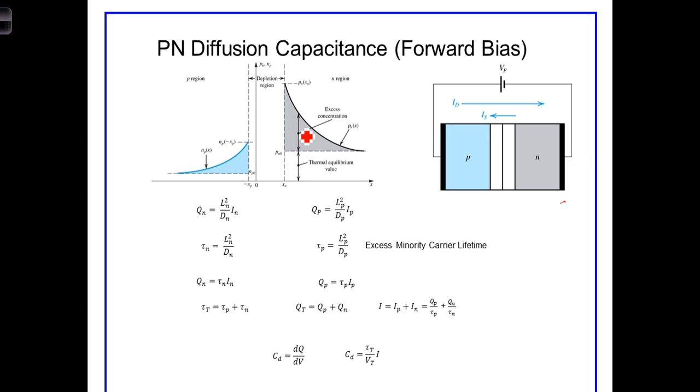Again, as we've seen before, this excess concentration is represented by the shaded areas of this graph.